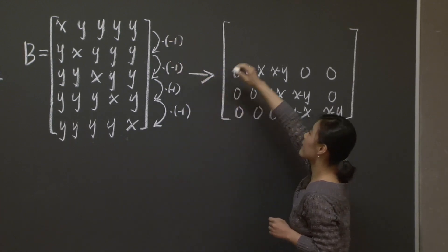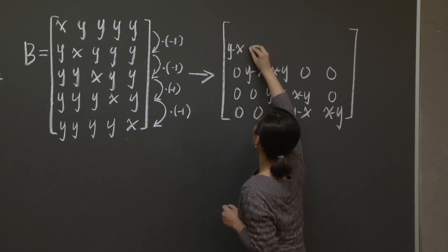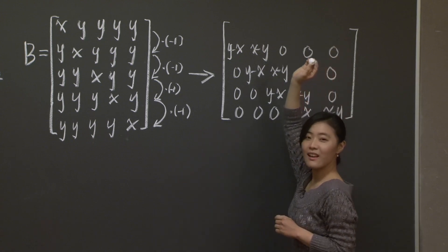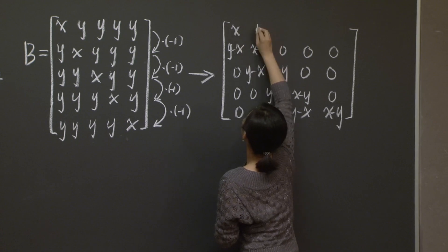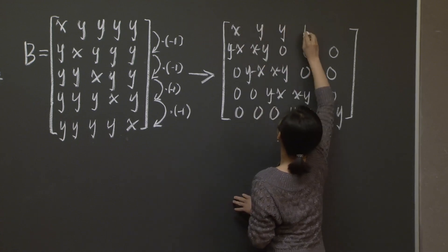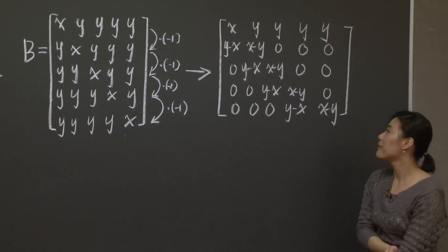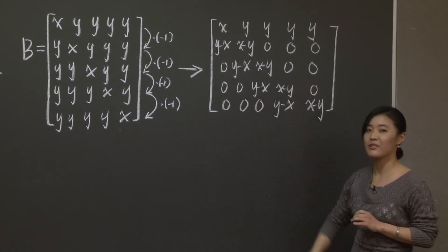And then you update the second row to y minus x, x minus y, 0, 0, 0. Let's keep the first row unchanged. So I'm going to copy it here.